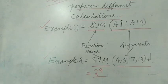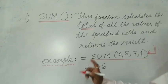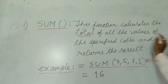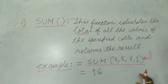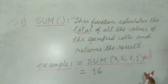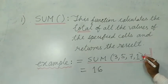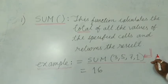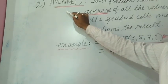Now we'll see more examples of formulas from your book. The first is the SUM function — this function calculates the total of all the values of the specified cells and returns the result. It will find out the sum of individual numbers, a row, or a column. You specify the range — that is, the initial cell address and the last cell address. Example: =SUM(3, 5, 7, 1) — press Enter and MS Excel displays the answer as 60.